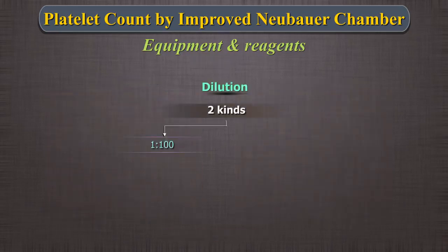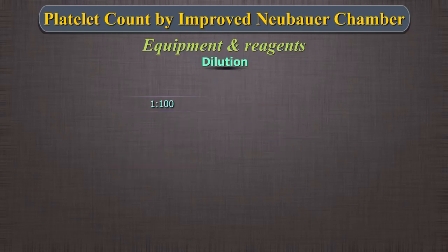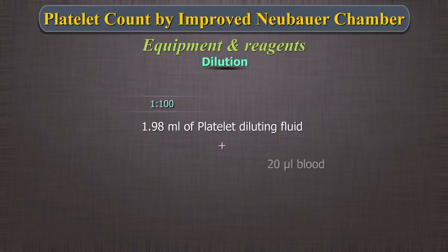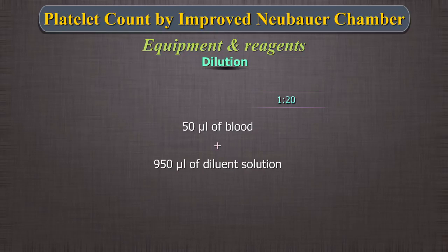Dilution: The standard dilution for platelet counts is 1 in 100. However, if the count is low, the 1 in 100 dilution can be difficult and can create errors. Therefore, if warranted, a 1 in 20 dilution can be employed. For 1 in 100: take 1.98 ml of platelet diluting fluid in a tube, then aspirate 20 microlitres of blood in a pipette and mix it with the diluent. For 1 in 20 dilution: take 50 microlitres of blood and mix with 950 microlitres of diluent solution. Wait for 10 to 20 minutes before charging the hemocytometer.